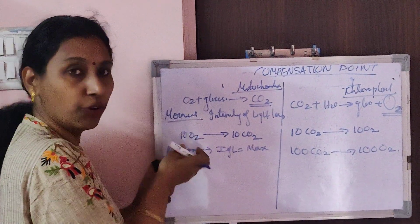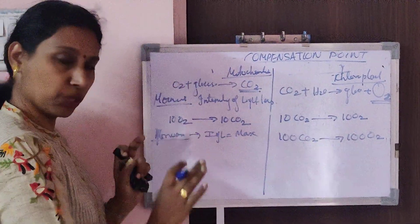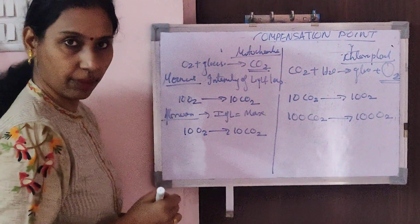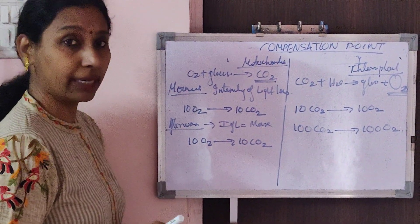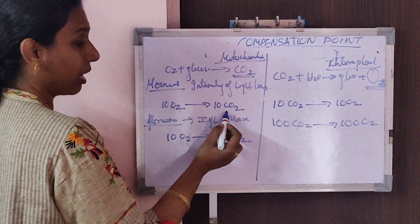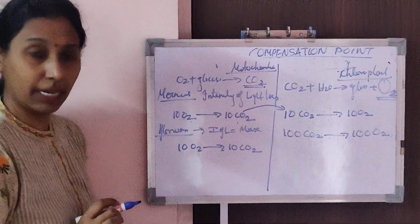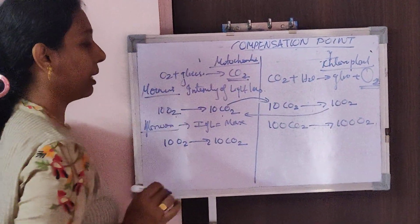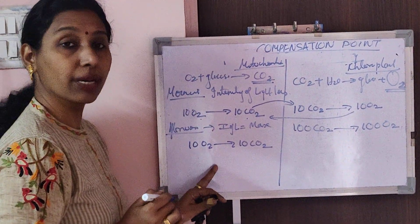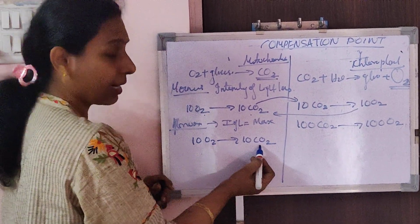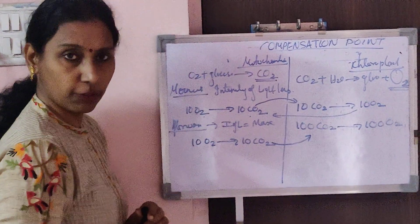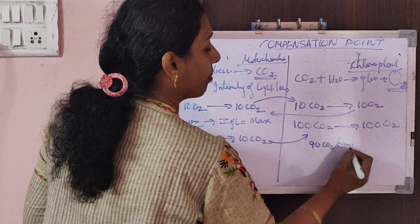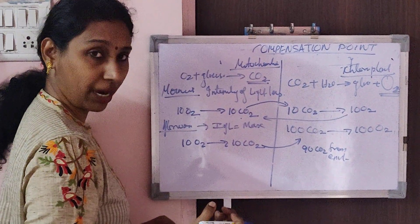But light intensity is not going to affect cellular respiration in mitochondria — the respiration process continues at the same pace, taking 10 oxygen and releasing 10 carbon dioxide. Now, when 10 carbon dioxide is released by mitochondria, it can be given to the chloroplast for photosynthesis, and the 10 oxygen from chloroplast can be given to the mitochondria. But during afternoons, the chloroplast needs 100 carbon dioxide — mitochondria provides only 10, so the plant takes 90 carbon dioxide from the environment, cleaning the air.